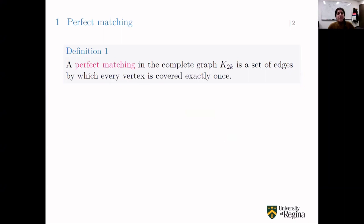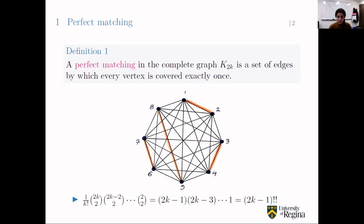Let's start with the definition of perfect matching. A perfect matching in the complete graph K_{2k} is a set of edges by which every vertex is covered exactly once. If you look at the complete graph K_8, the edges in orange form a perfect matching — every vertex is covered exactly once. The number of perfect matchings in the complete graph of size 2k is (2k-1)!!, which equals (2k-1) times (2k-3) and so on — every other number.